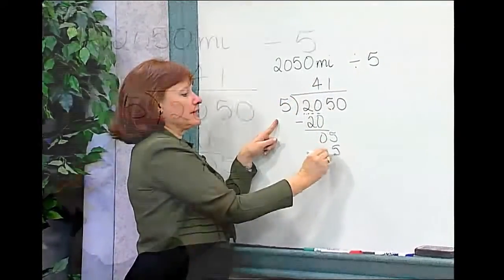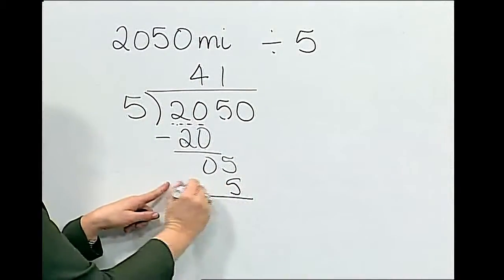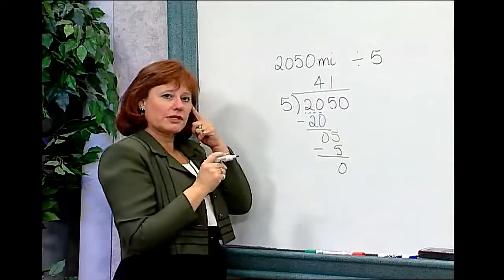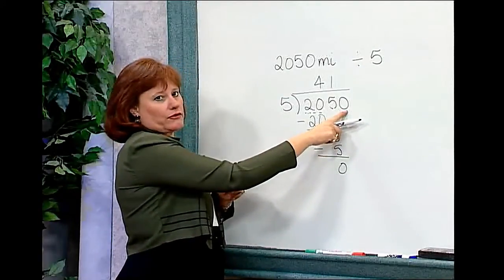One times five is five. When I subtract, once again I get zero. I'd really like to be done with the problem now, but I have to keep in mind there is one more place that has not been accounted for.